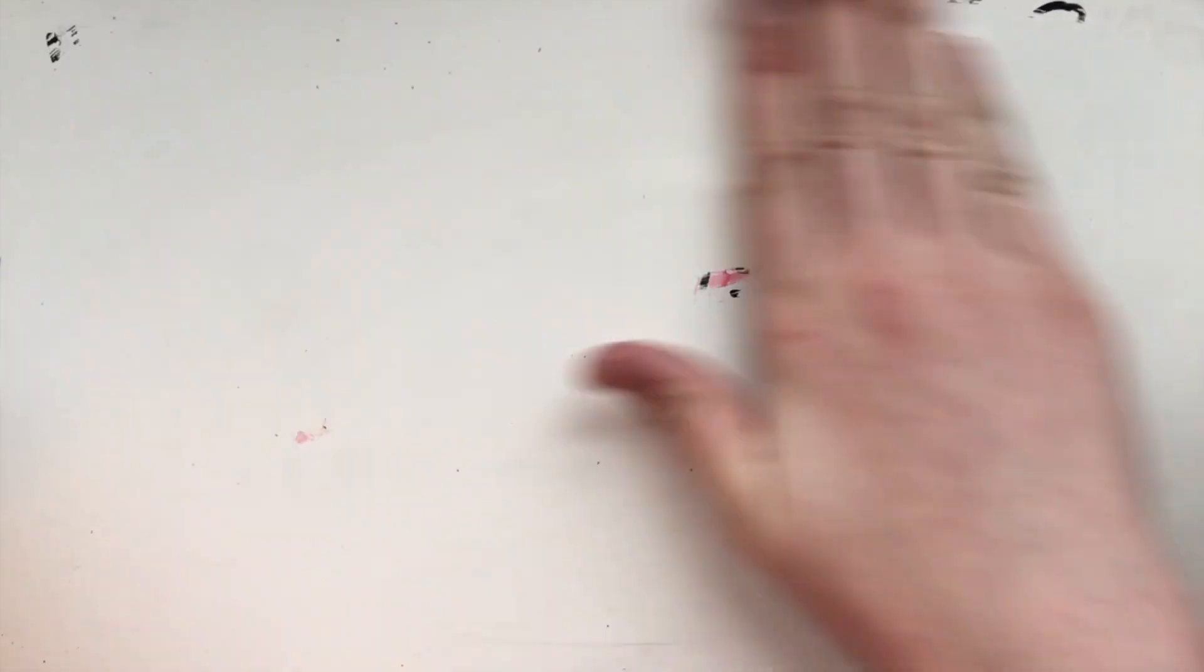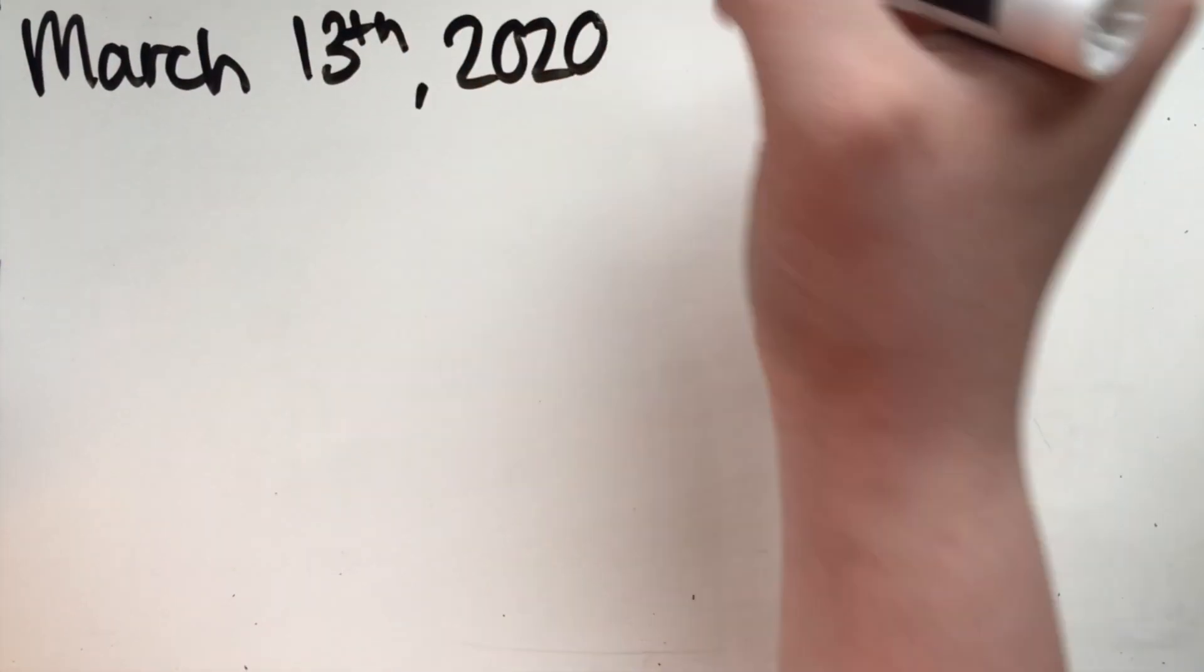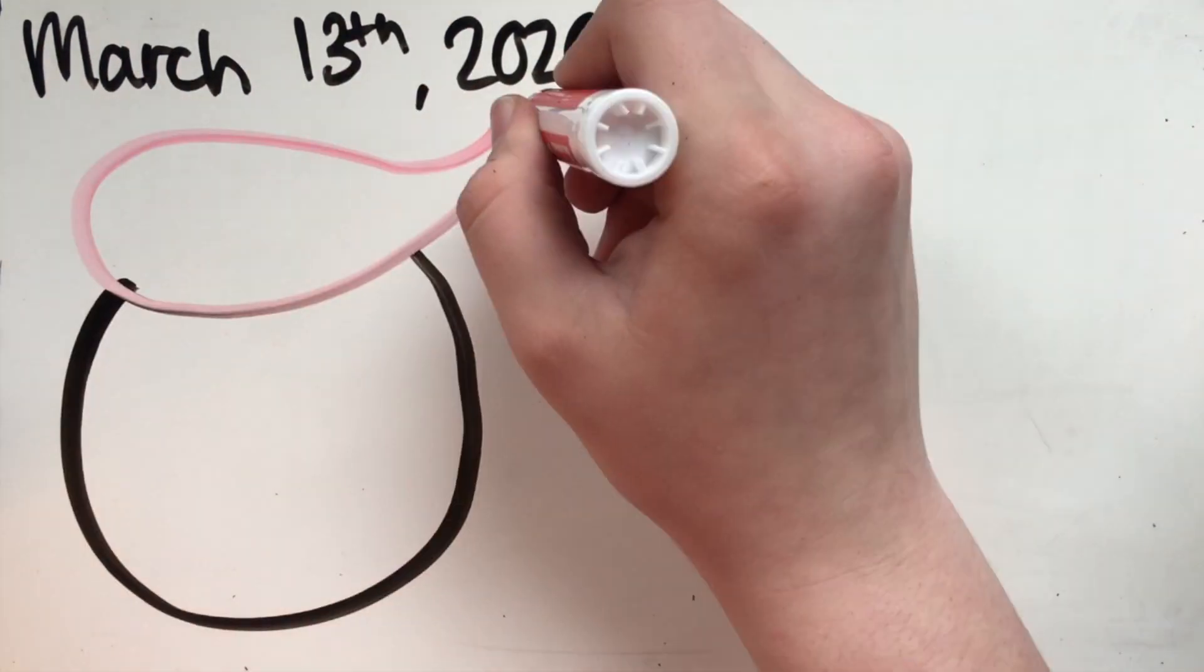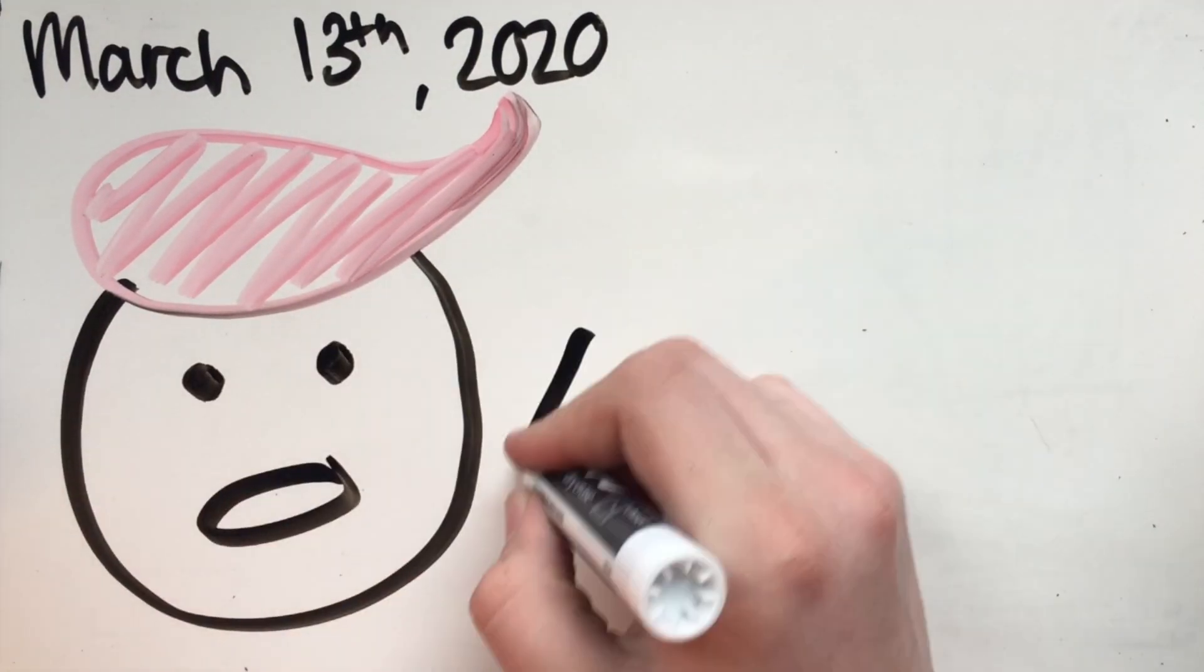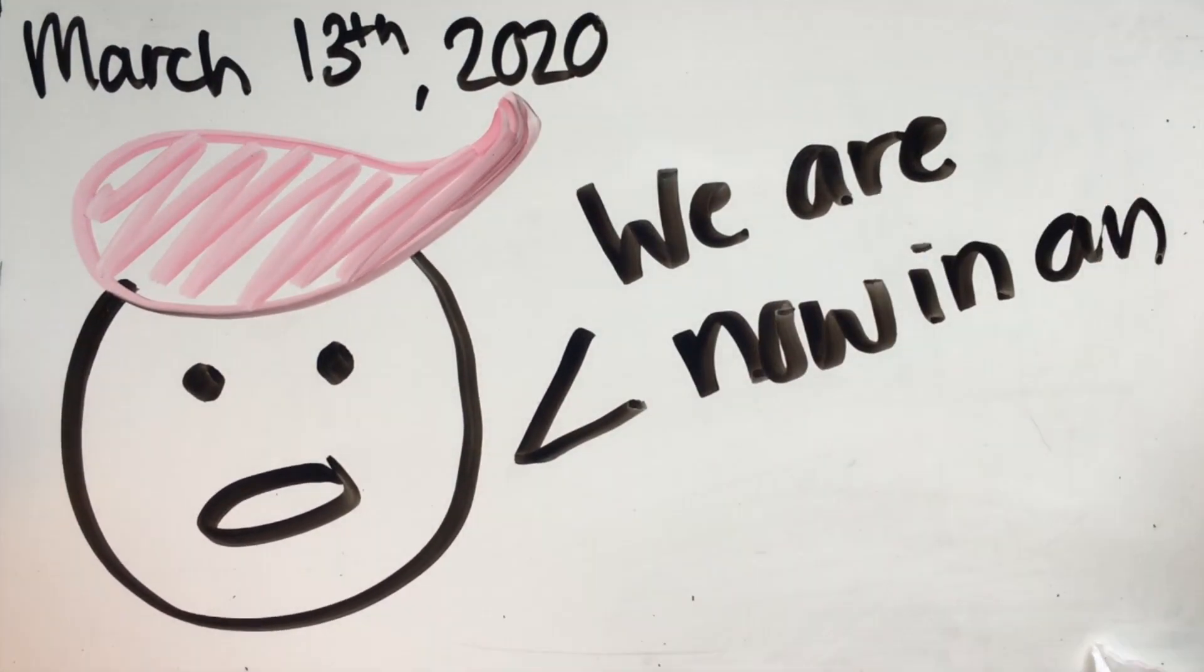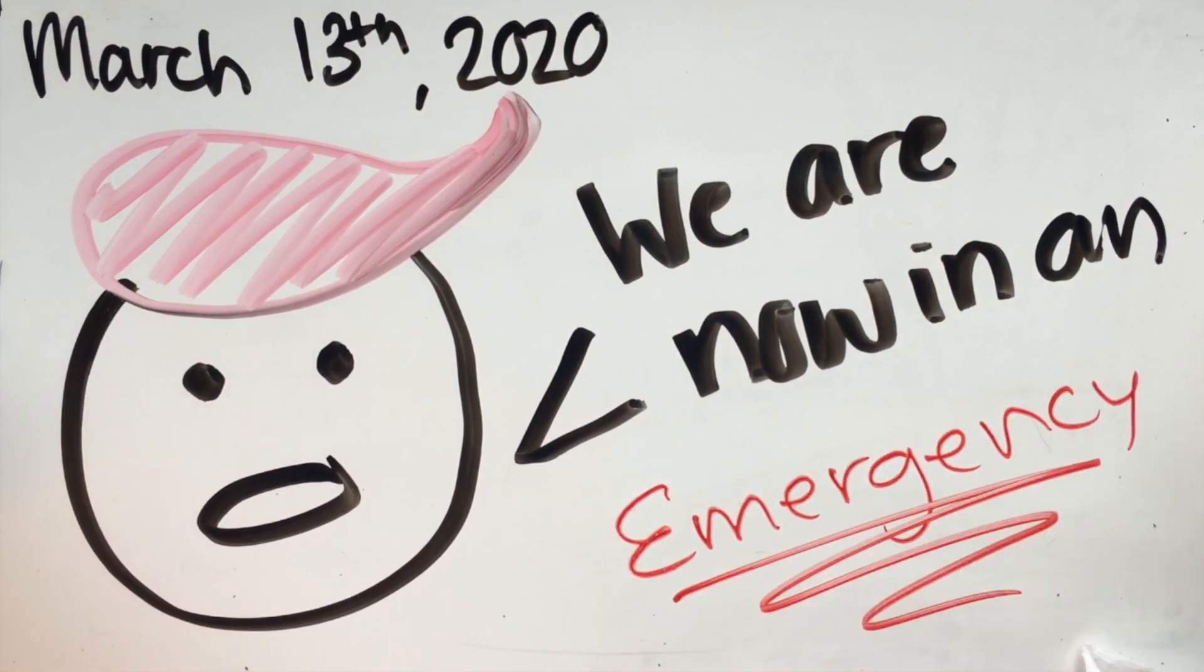Not one day later, on March 11th, the World Health Organization declared coronavirus a global pandemic. On March 13th, Trump declared a state of emergency, then three days later, he put social distancing guidelines in place.